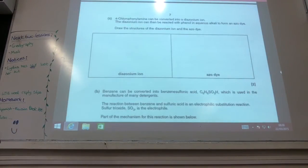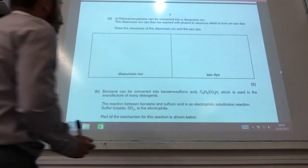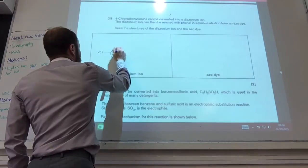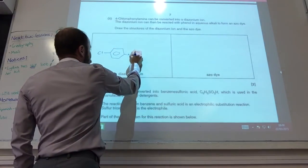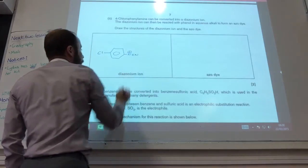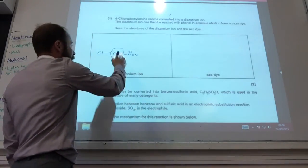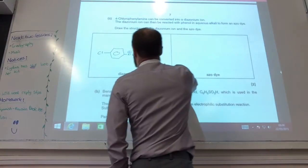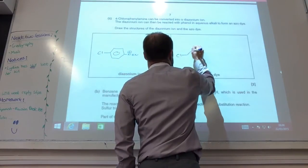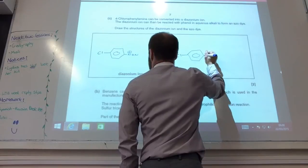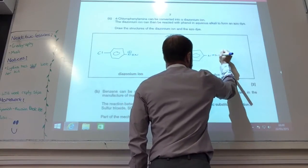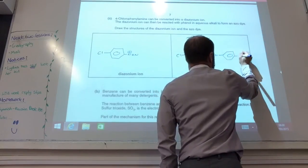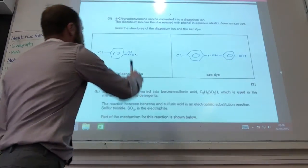Now converting 4-chlorophenylamine to a diazonium ion — draw the structure of the diazonium ion. The NH2 group becomes the diazonium functional group, with the positive charge on that nitrogen. Then reacting with phenol, it couples with the phenol group — joining onto that nitrogen there.